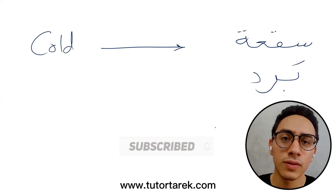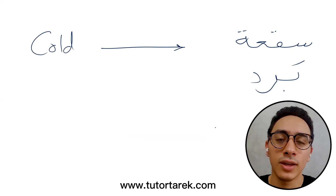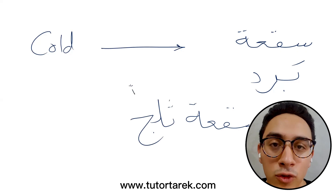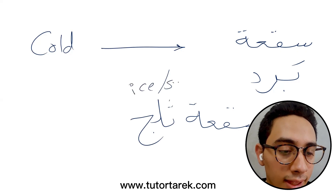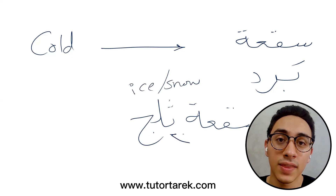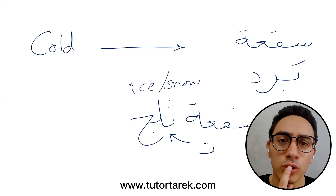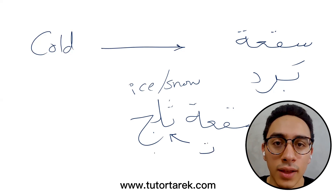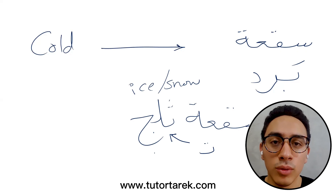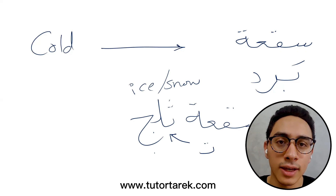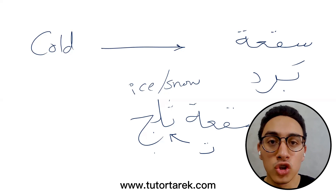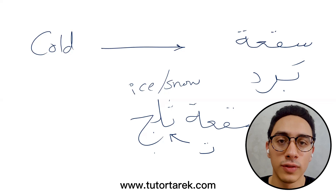There is another way to use it when it's extremely cold — you can say 'El-Gaw Sa-a Talg.' Talg means ice or snow. Note that in the Egyptian dialect we say 'Talg,' not 'Thalg,' because we don't put the tongue between the teeth for the 'th' sound. Keep in mind the differences between the Egyptian dialect, classical Arabic, and other dialects. So 'Sa-a Talg' means extremely cold.